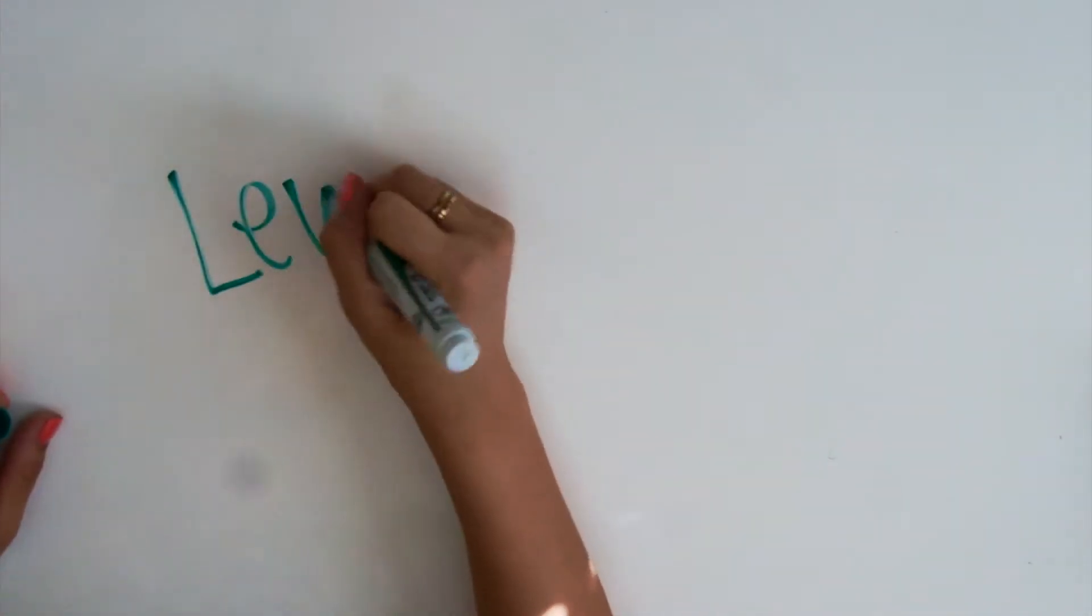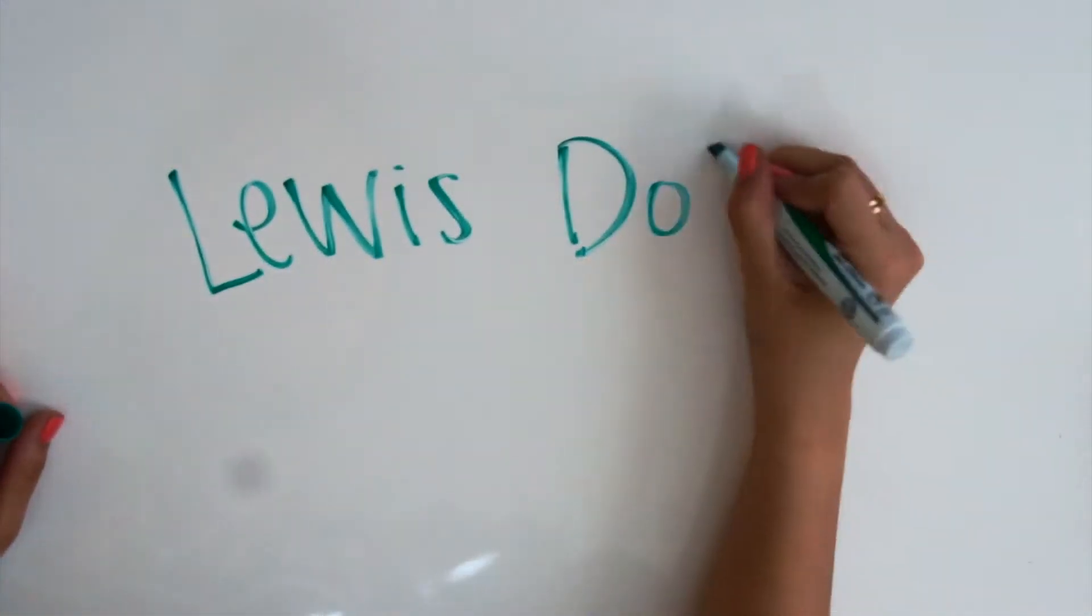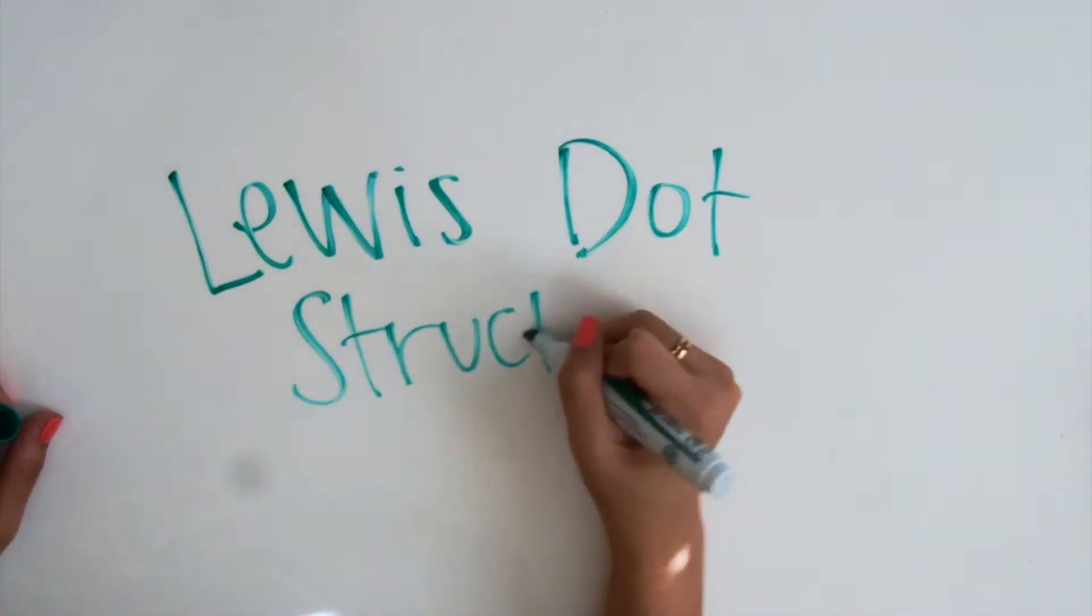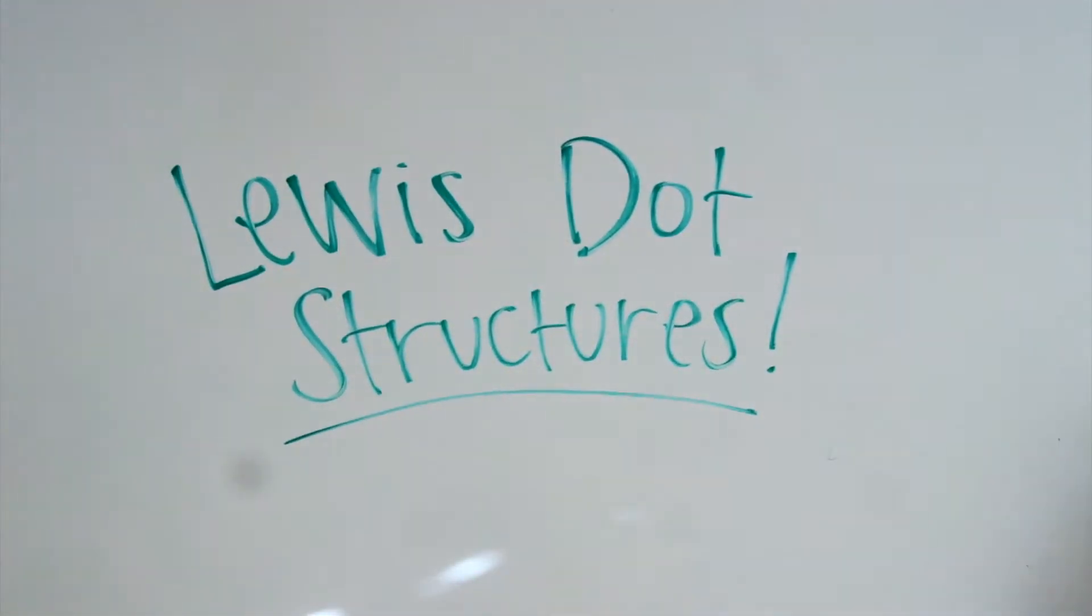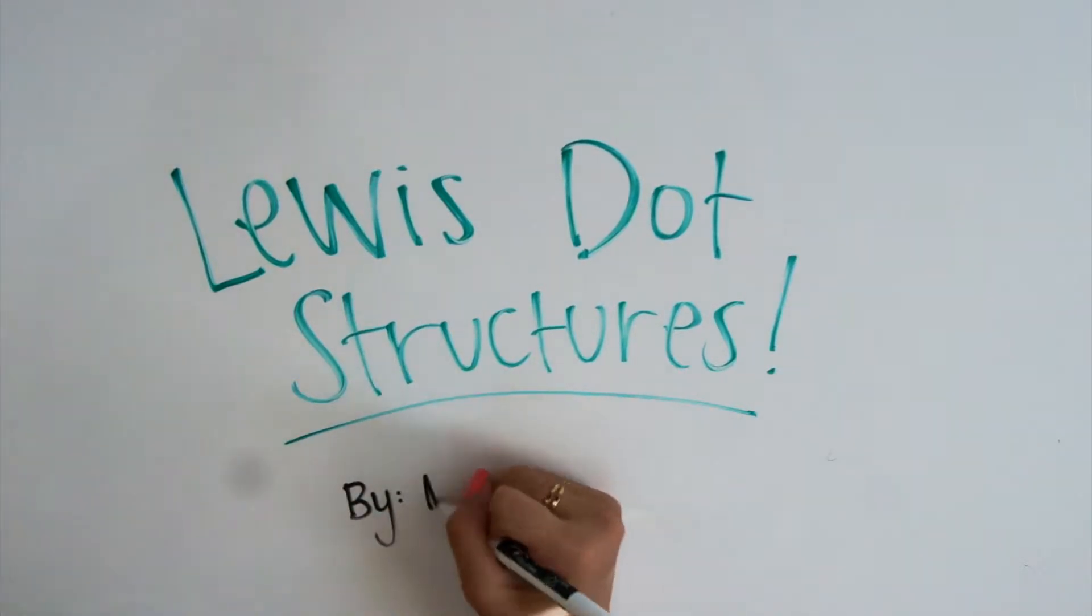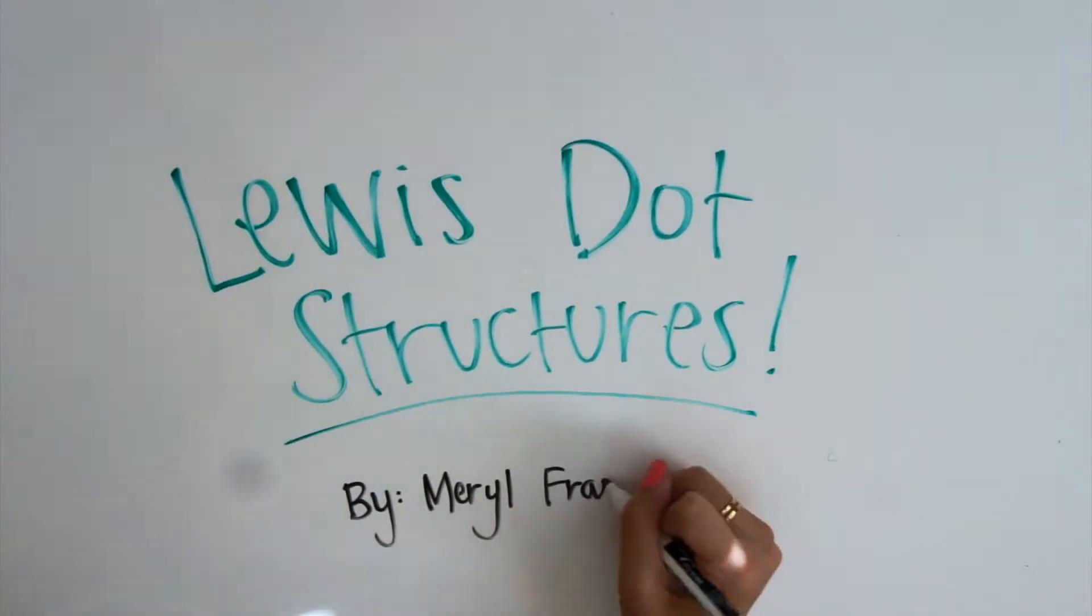Hello, my name is Meryl Franco, and today I'll be teaching you how to create Lewis dot structures. These structures are diagrams that show the bonding between atoms of a molecule and the lone pairs of electrons that may exist in the molecule.